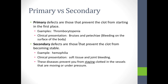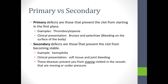A primary defect involves those that prevent clotting from starting in the first place. For example, people who have thrombocytopenia simply can't make a clot. Their clinical presentation includes bruises and petechiae — bruises on the surface of the body.